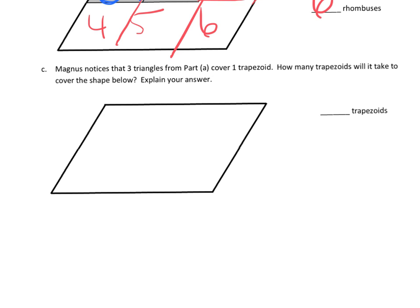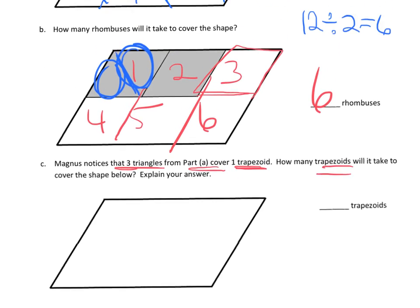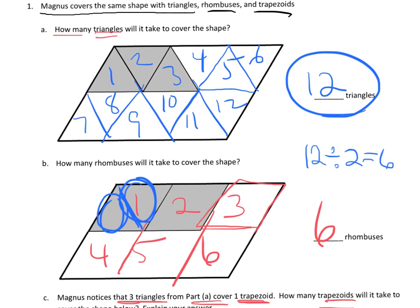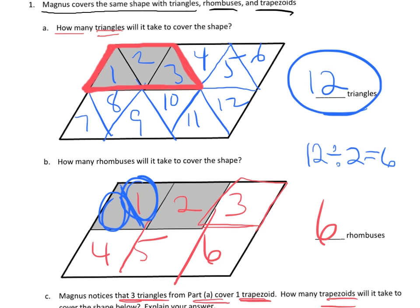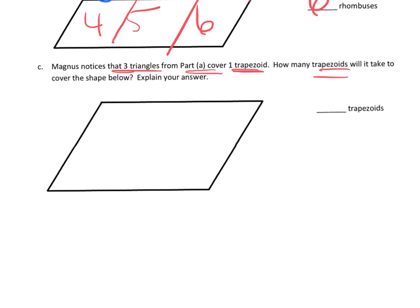And then the last one, Magnus notices that 3 triangles from part A makes 1 trapezoid. And how many trapezoids will it take to cover the shape? So the idea is we're going to peek way back up here, and we're going to notice that it takes 3 triangles to create a trapezoid. Right there. And we want to know how many trapezoids does it take to fill in, or to cover, this shape. And we could, if we wanted to, we could try our best to draw that.